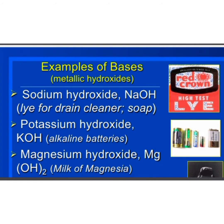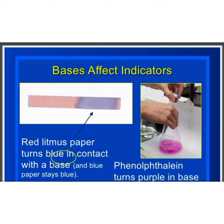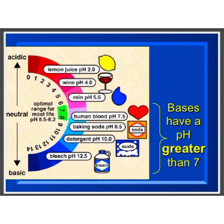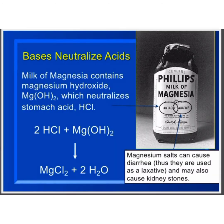Examples of bases are sodium hydroxide, potassium hydroxide, magnesium hydroxide, etc. Bases turn red litmus paper blue. Phenolphthalein turns purple in a base. Bases have a pH greater than 7. Milk of magnesia contains magnesium hydroxide, which neutralizes stomach acid and relieves acidity.